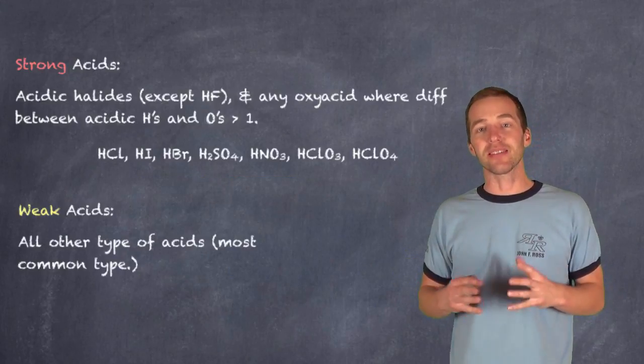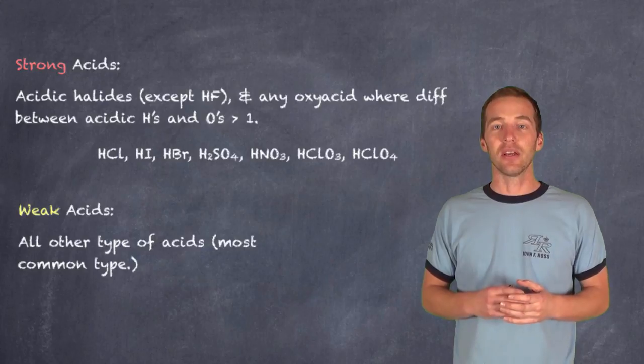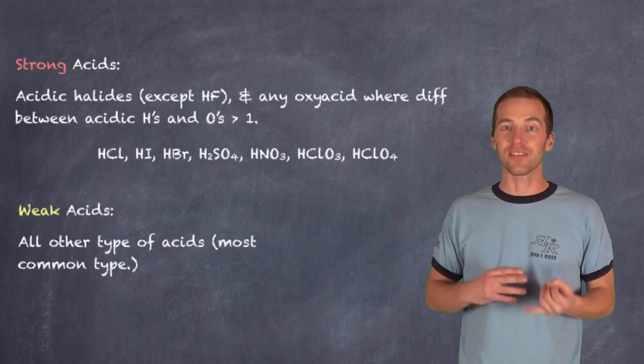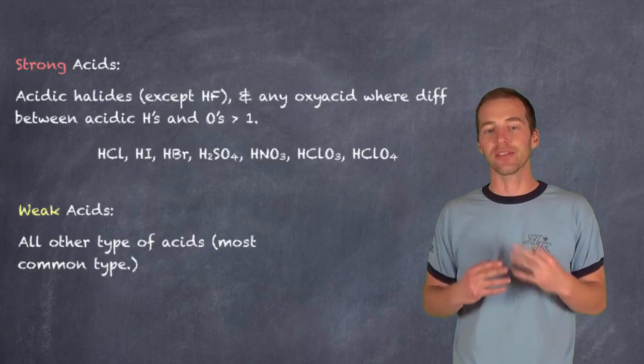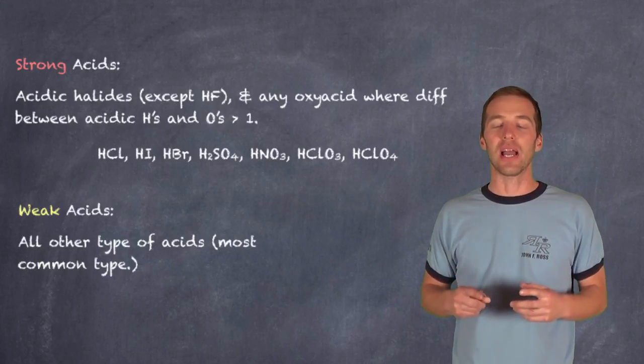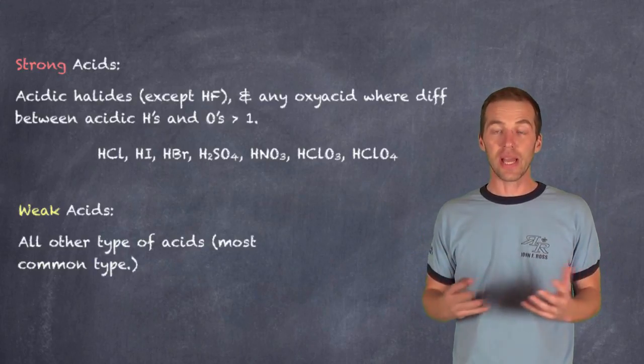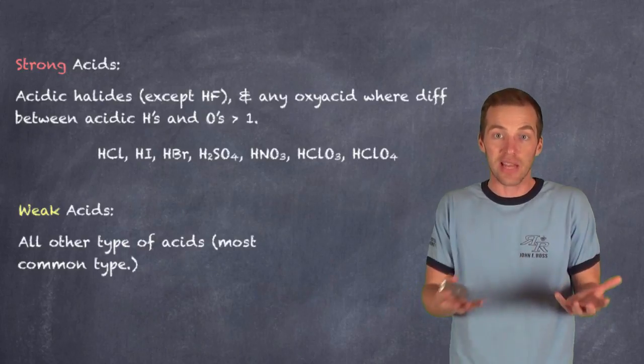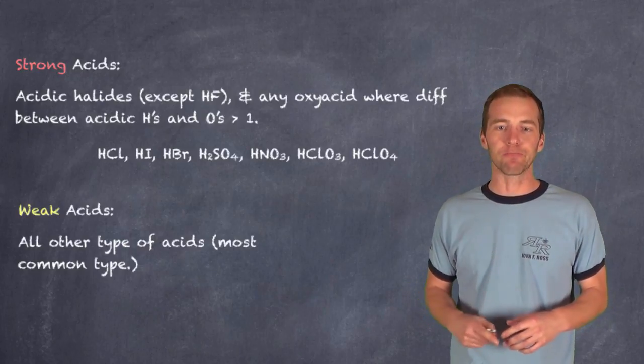In terms of weak acids, that's just generally everything else. In fact, most acids are weak acids. We think about lactic acid and citric acid and ascorbic acid. Almost all other types of acids we would classify as weak acids. So, all other acids, that is acids that aren't strong acids, are obviously weak.